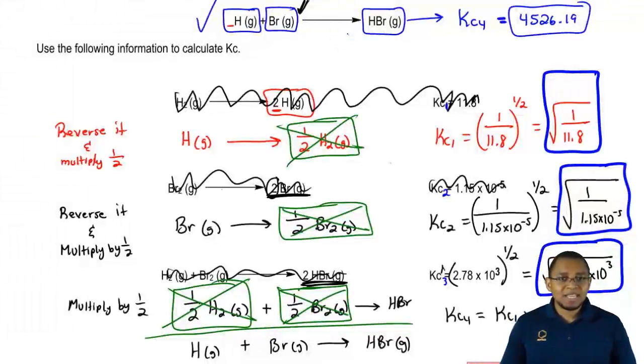So just remember the tips that we did. If you reverse it, K becomes a reciprocal. If you multiply it by a number, that becomes the power. If you divide by a number, then it becomes 1 over that number as a power. So if you divide it by 5, it'd be multiplying by 1 fifth. If you divide it by 4, it'd be like multiplying by 1 fourth. Those would become the powers. Just remember those small little principles and you'll be able to get these questions correct.